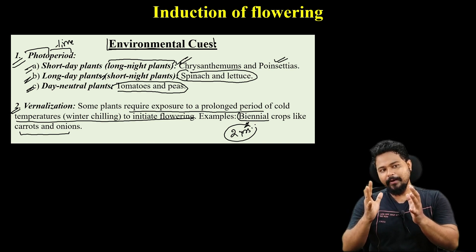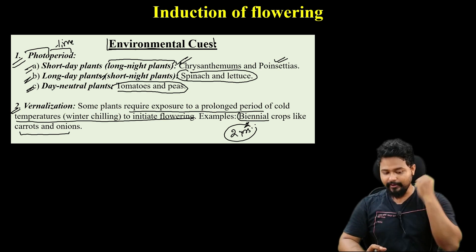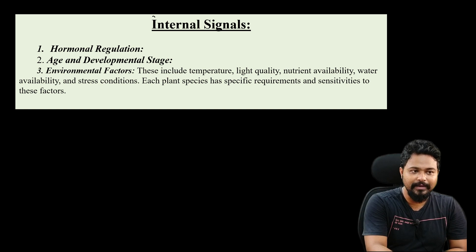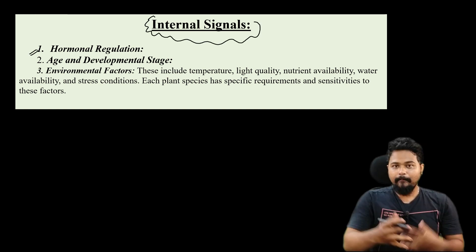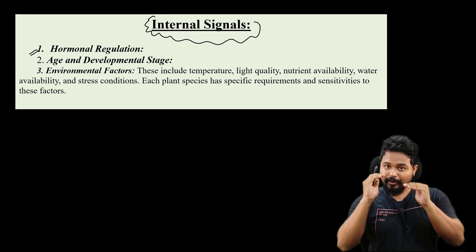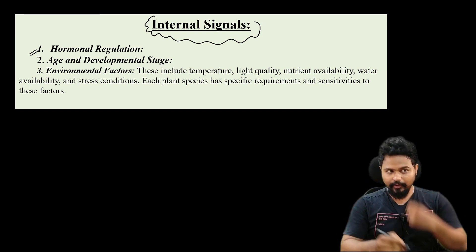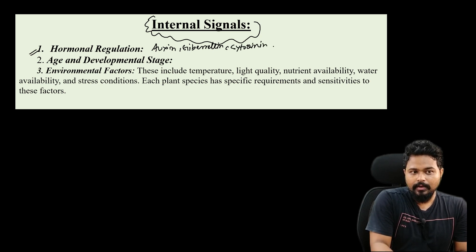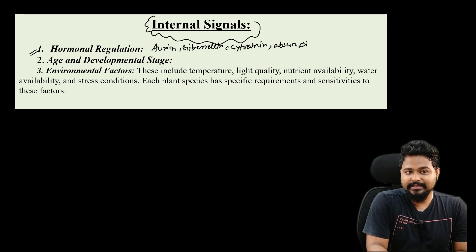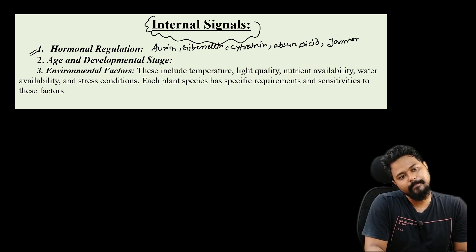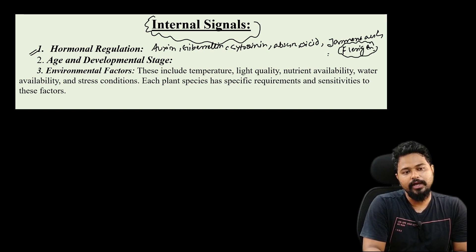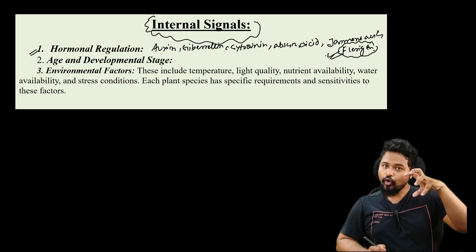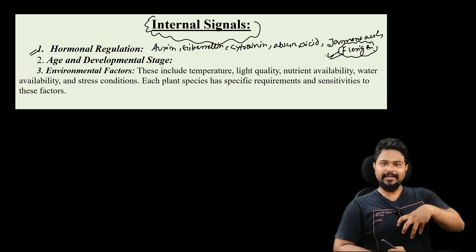Now, external factors influencing flowering have been covered. Next, internal signals come from within the plant — for example, hormonal signals. Within the plant body, certain hormones influence the level of flowering: auxin, gibberellin, cytokinin, abscisic acid, jasmonic acid, and the most important hormone — florigen. Florigen is the important hormone that triggers flowering and is a very important hormone in this context.